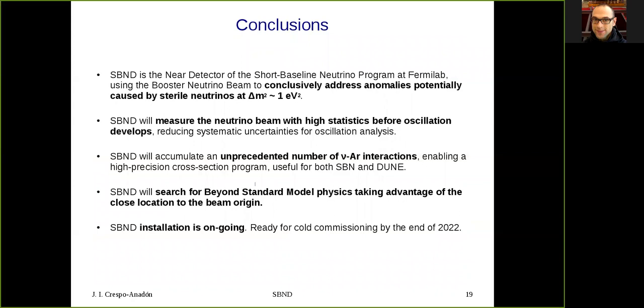So in conclusion, SBND is the near detector of the short-baseline neutrino program at Fermilab that will use the booster neutrino beam to conclusively address the anomalies potentially caused by sterile neutrinos in the region of about one electron volt squared. SBND will measure the neutrino beam with high statistics before oscillation develops. And by doing so, will reduce the systematic uncertainties for the oscillation analysis. In addition, SBND will accumulate an unprecedented number of neutrino-argon interactions, enabling a high precision cross-section program which is useful for both SBN and DUNE. And in addition, because of the close location, SBND will search for beyond standard model physics. Currently, SBND is being installed and will be ready for cold commissioning by the end of 2022.